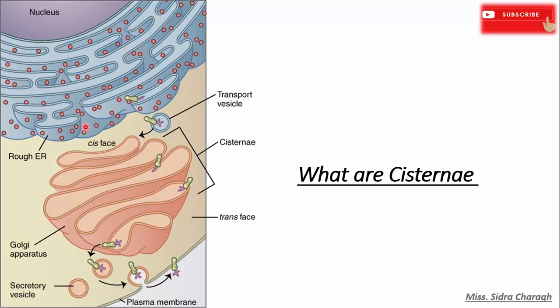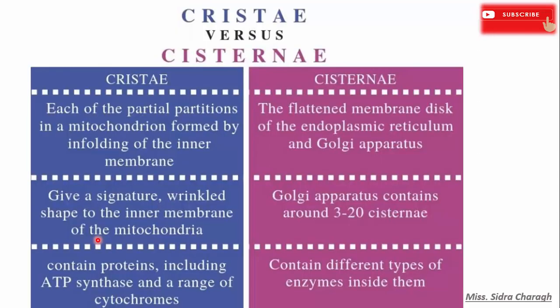Compounds that enter the Golgi apparatus from the cis phase exit from the trans phase after packing occurs. Now let's see the main differences: in the case of cristae, each forms a partial partition in the mitochondrion by infolding of the inner membrane.